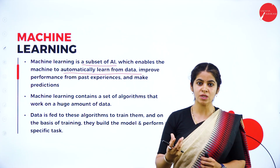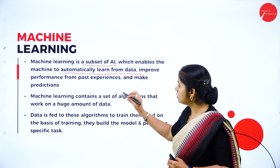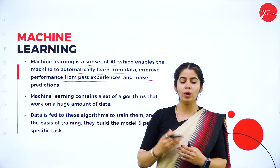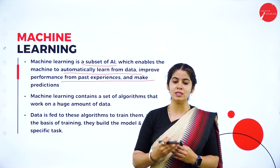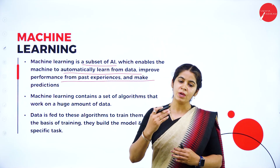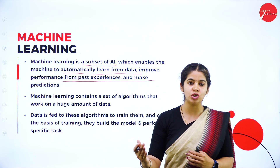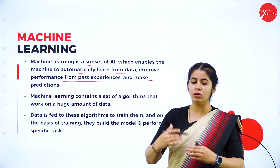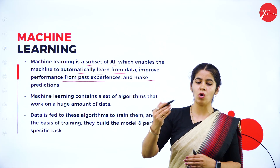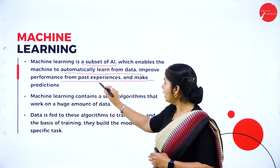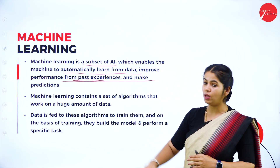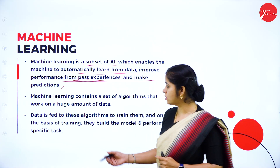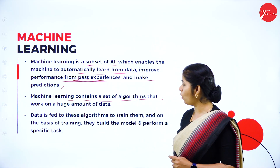Machine learning improves performance from past experiences and makes predictions. Just as a human learns by their experience, similarly the machine learns from the decisions taken previously — comparing that with the present, then improving the decision, adding what needs to be added and deleting what needs to be deleted. It learns from past experience and makes current predictions.